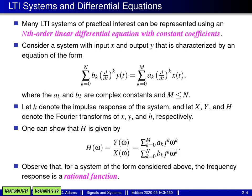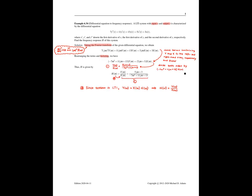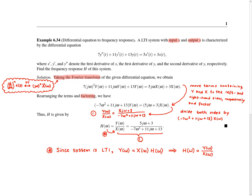I'd like to consider example 6.34. In this example, we're given an LTI system with input little x and output little y, characterized by a particular differential equation where the prime symbols denote derivatives. We're asked to find the frequency response big H of this system.